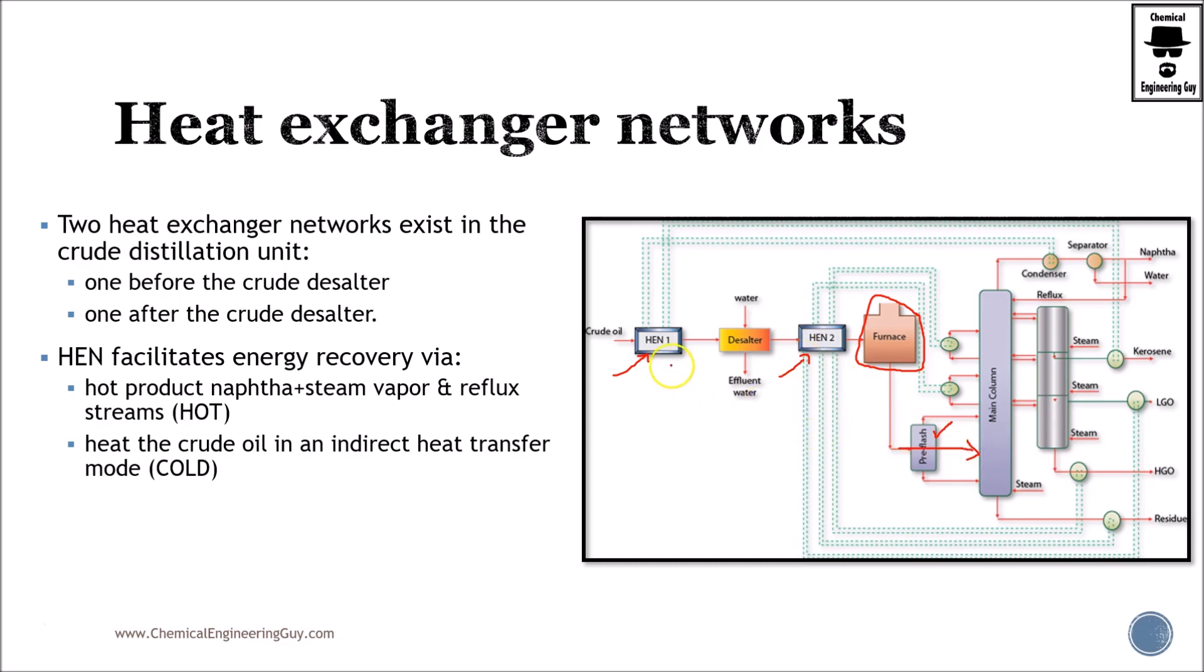What I haven't told you much about are HEN1 and HEN2. There are two main heat exchanger networks: one before the crude desalter—remember that increasing the temperature here improves desalting efficiency—and one before the furnace.